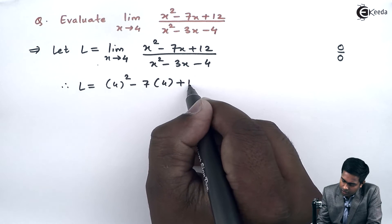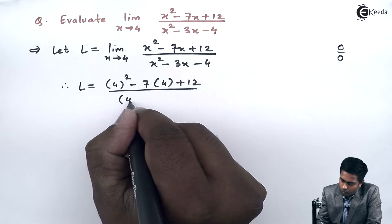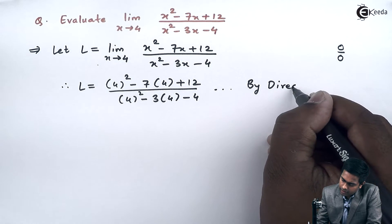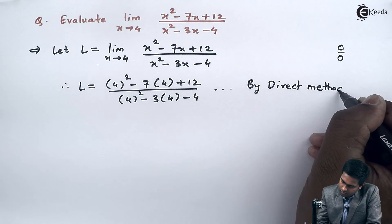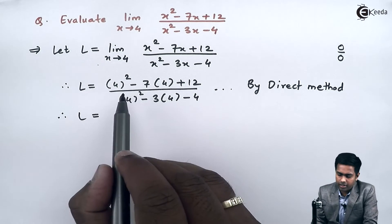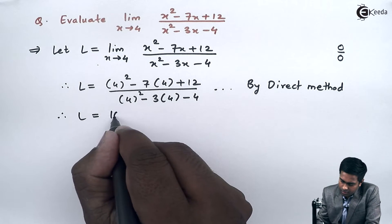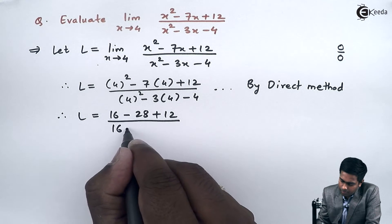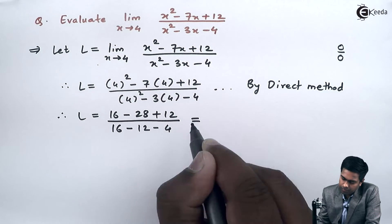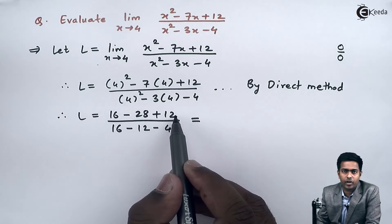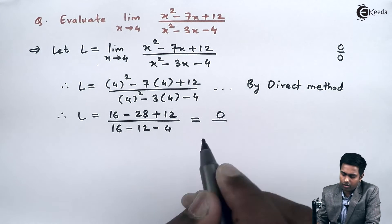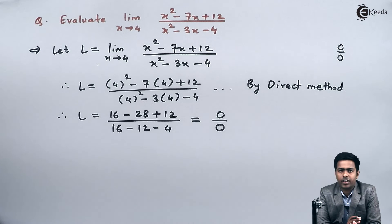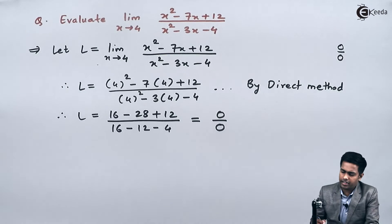Applying direct method: in the numerator we get 4² = 16, minus 28, plus 12 — giving 16 + 12 = 28, minus 28 = 0. In the denominator we get 16 minus 12 minus 4 = 0. So this limit gives us the value 0/0, which is called an indeterminate form.